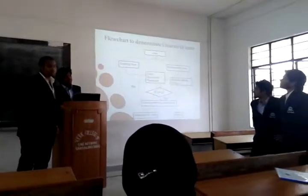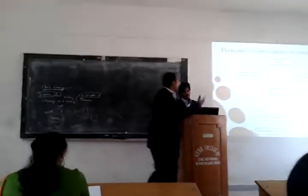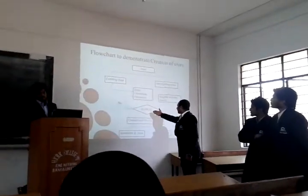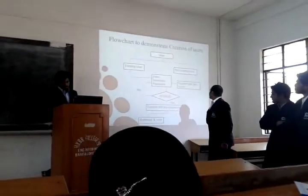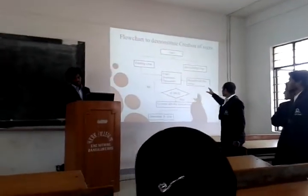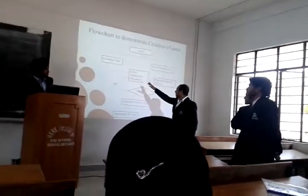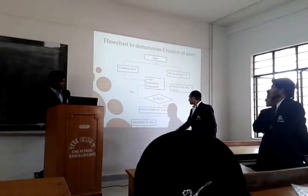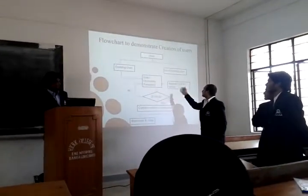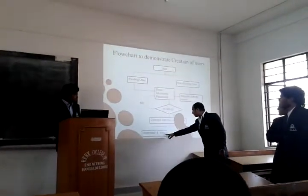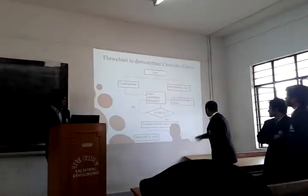Here we have two flowcharts: one for users and one for the server. Users are of two types: existing user and new user. The existing user provides a password and username, and if valid, it connects to the cloud server. If it is a new user, they must get access from the admin. After registration is done, they get a password and username, and if valid, they can also connect to the cloud server. After both existing and new users are authorized by the admin, they can download, view, and save files.